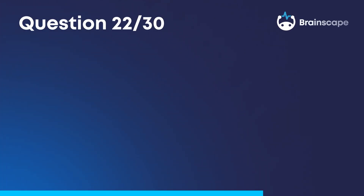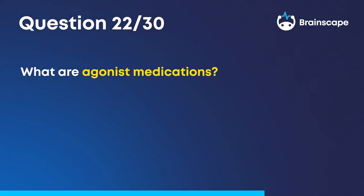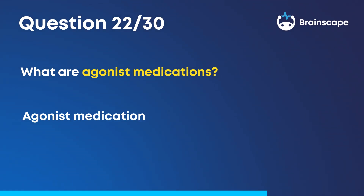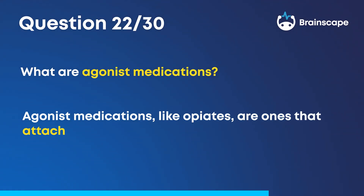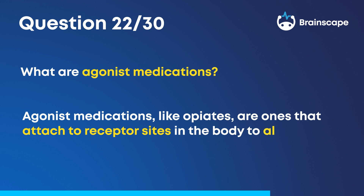Question 22. What are agonist medications? Agonist medications, like opiates, are ones that attach to receptor sites in the body to alter or influence a change.